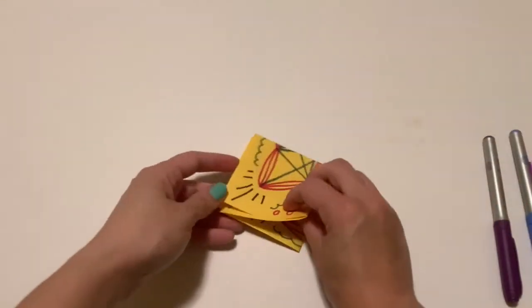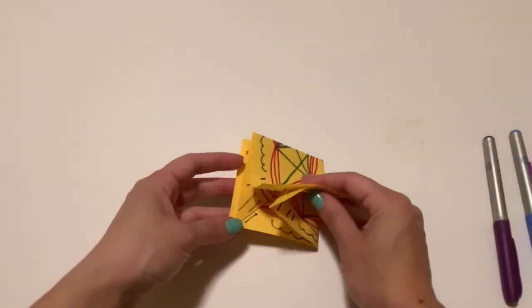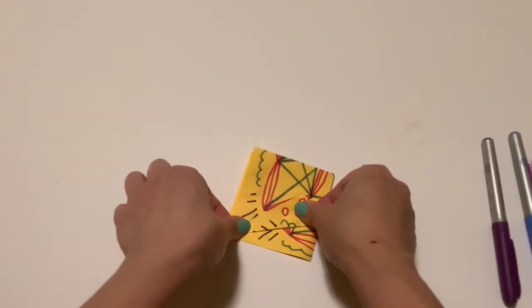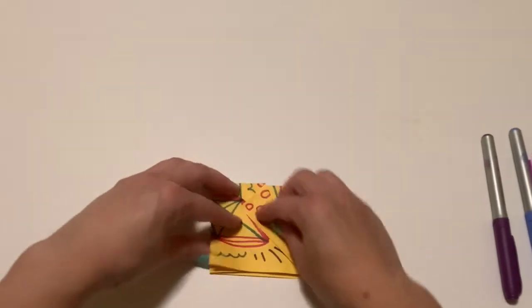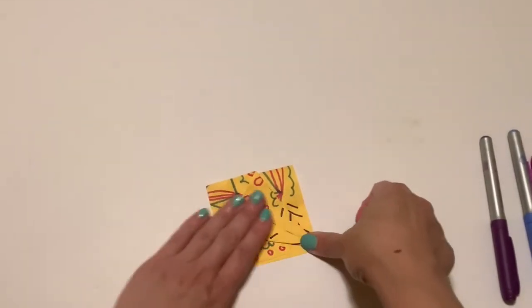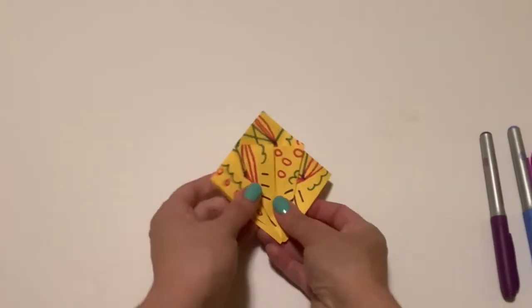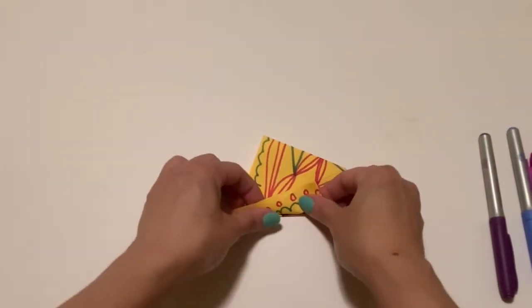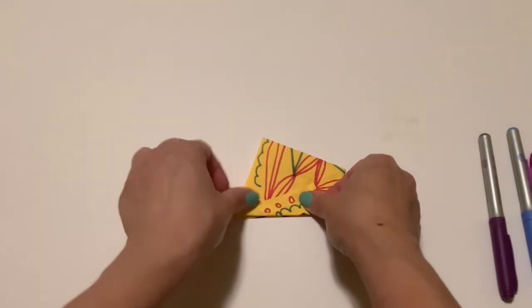Then I'm going to, with the areas that are the opening, fold from the edge inward to the center so it's going to meet up with that center fold. I'm going to do that on one side and then I'm going to flip it and do it on the other side.